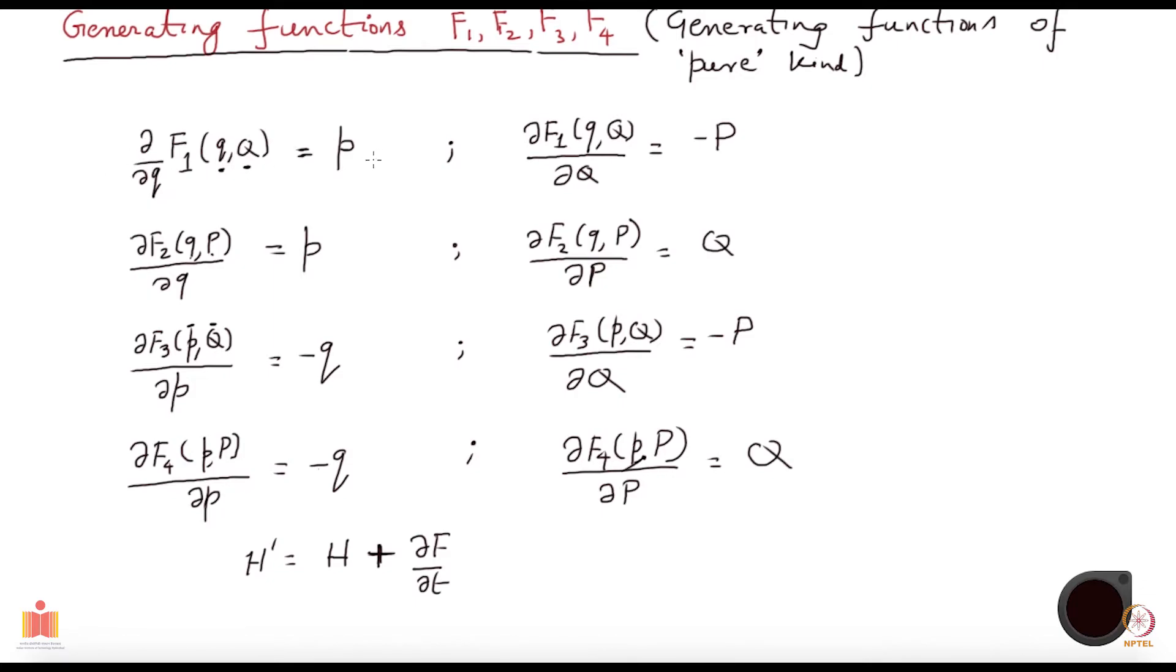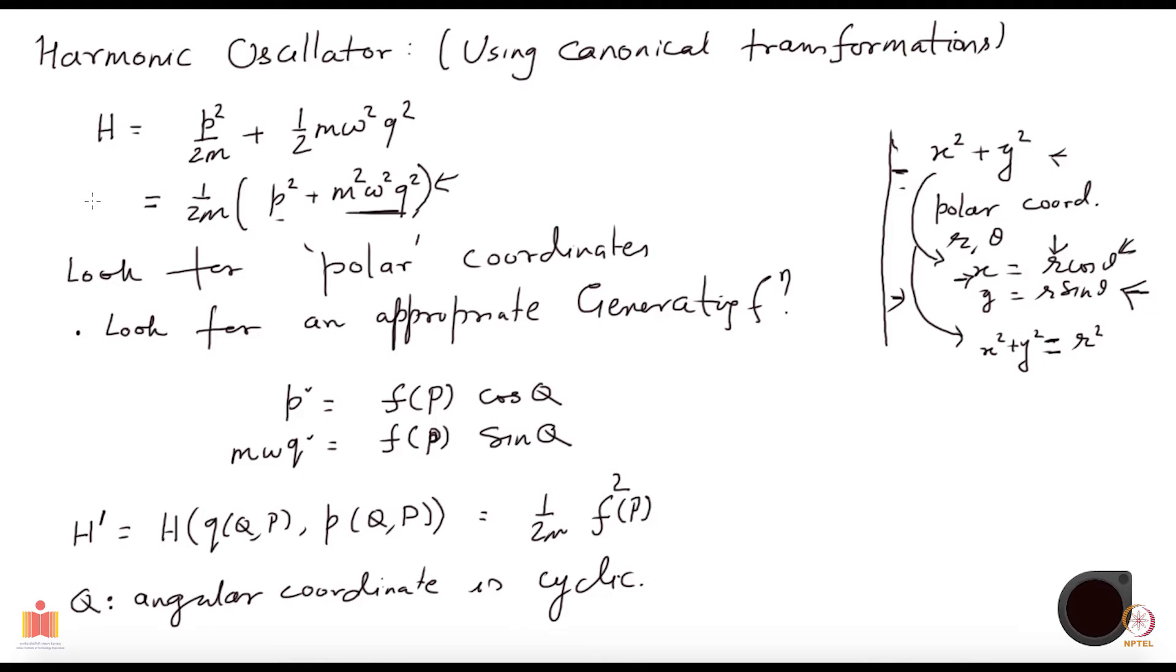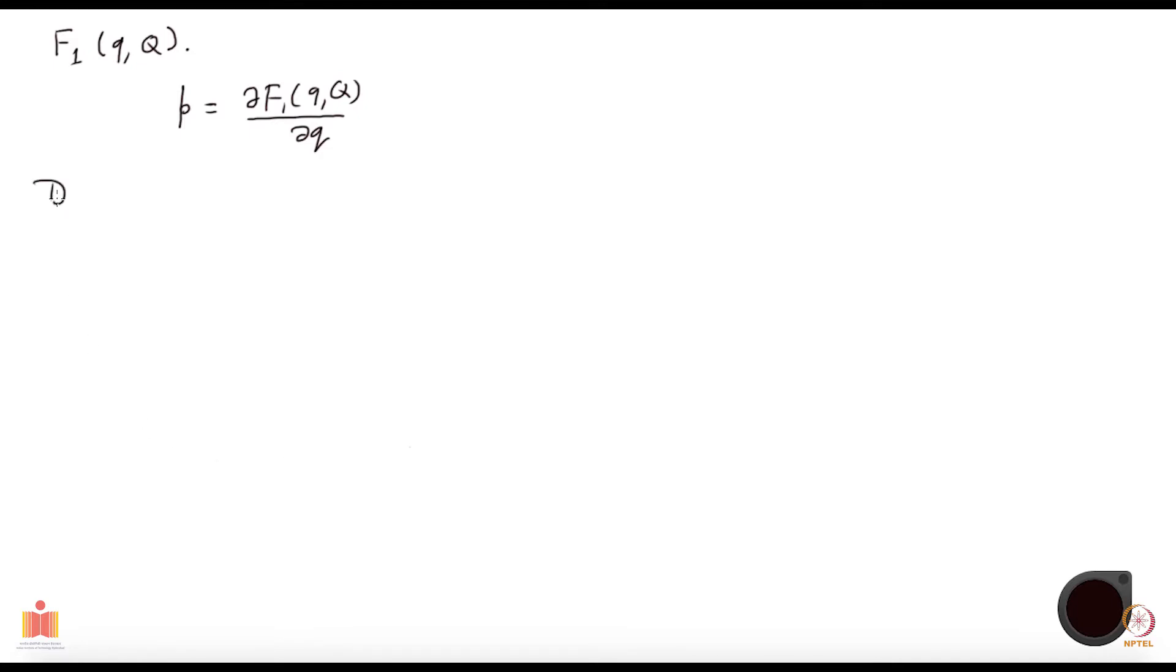Derivative with respect to small q gives small p. That is what I am writing here. Small p is what you get from taking derivative with respect to small q. So right hand side is a function of small q and capital Q. So I should express small p also in those arguments. If I divide these two equations, let me call this one 1 and this one 2. If I divide equation 1 by 2, then I get